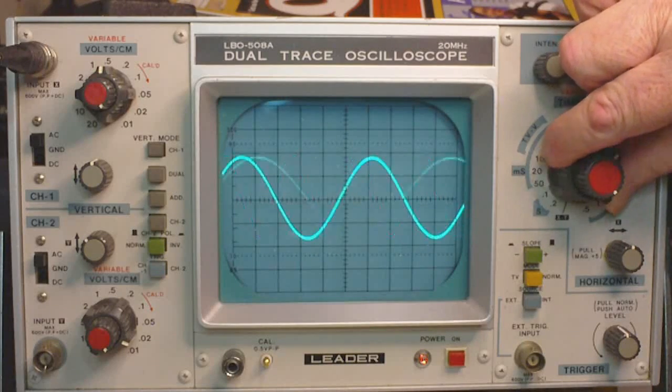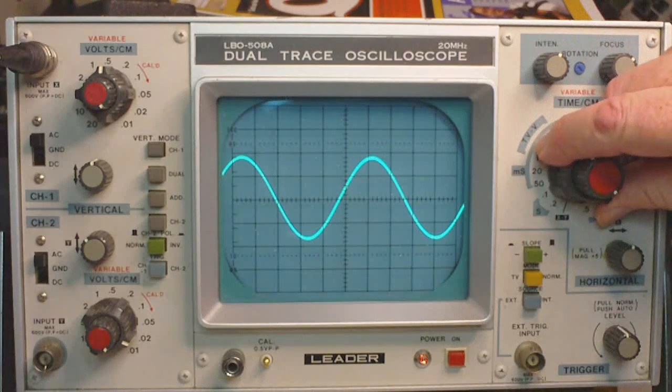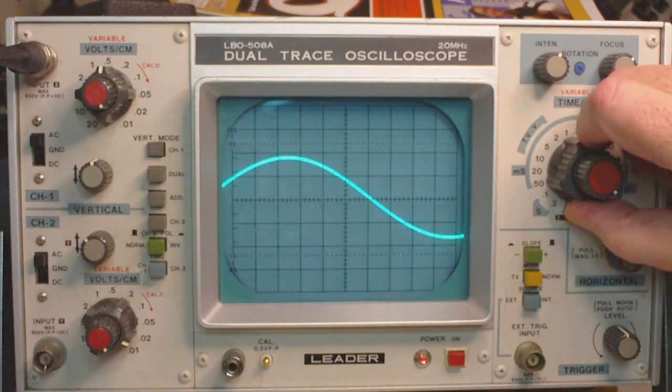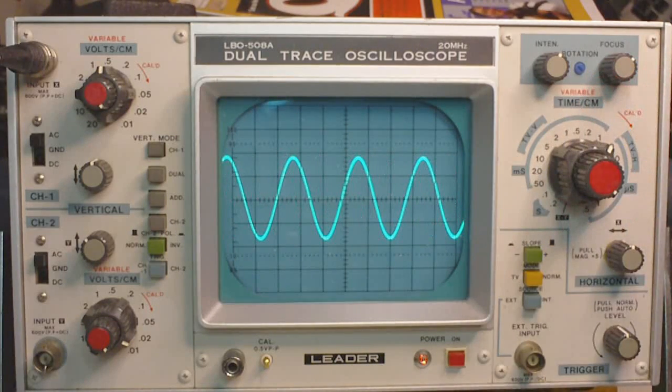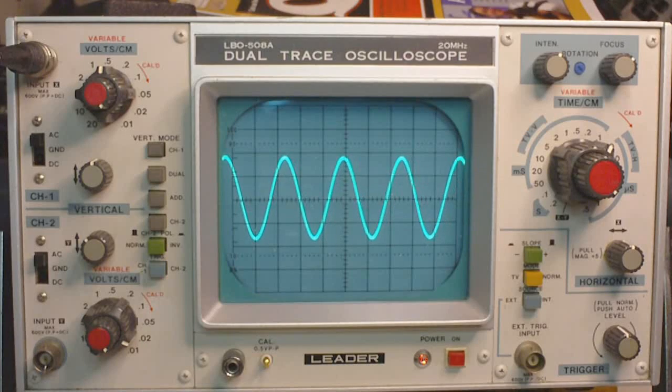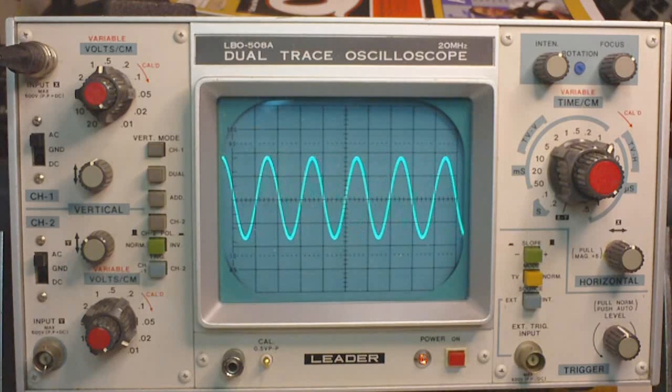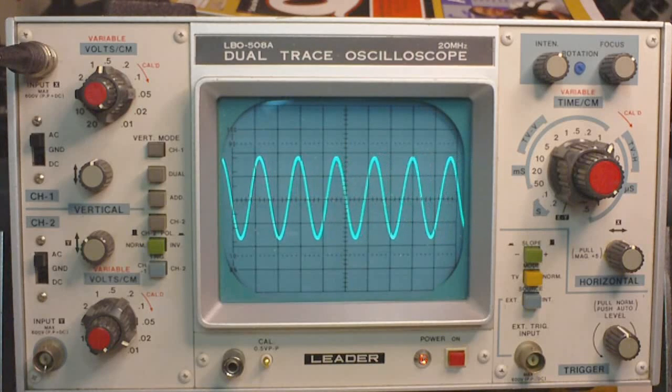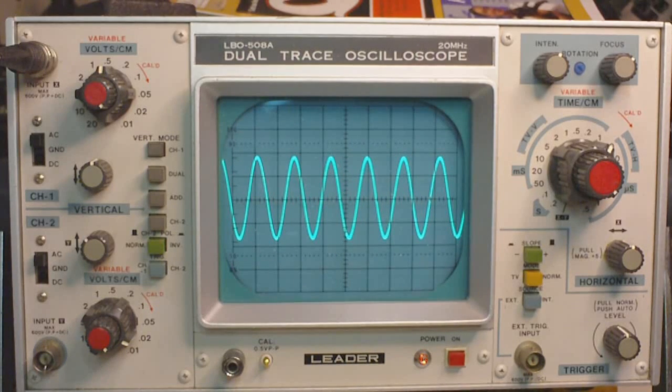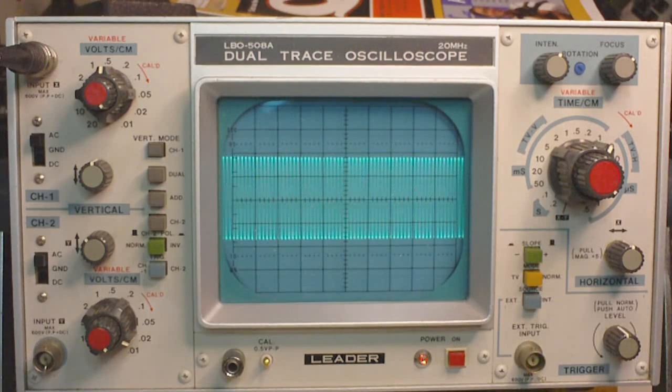And here, as I increase the time base, it increases the waveform. Now I'm going to increase the signal generator in frequency. And as you can see, as the frequency increases, the cycles get closer together. I'm going to bump it up by 10. And I'm going to bump it up by 10 again.